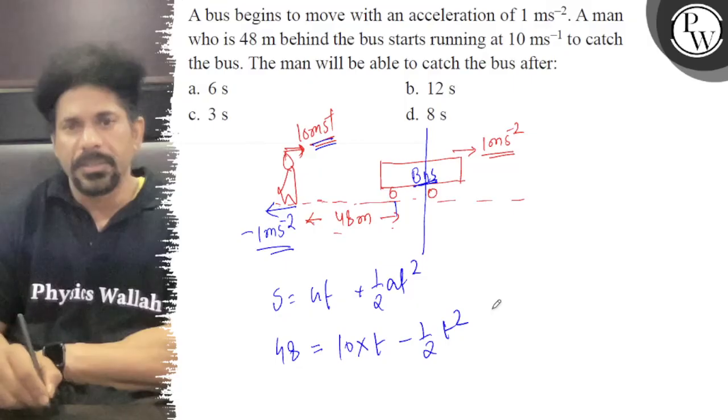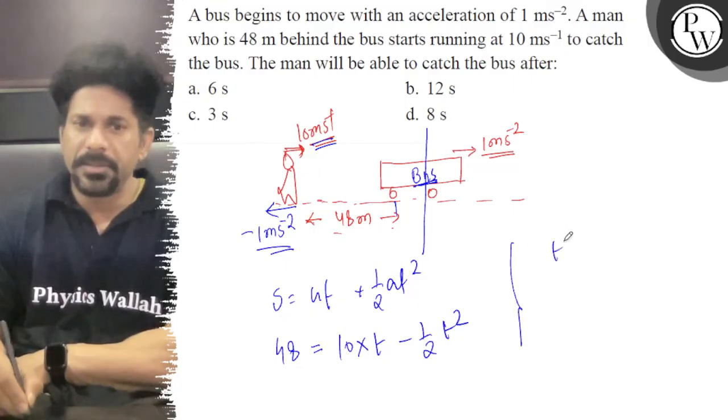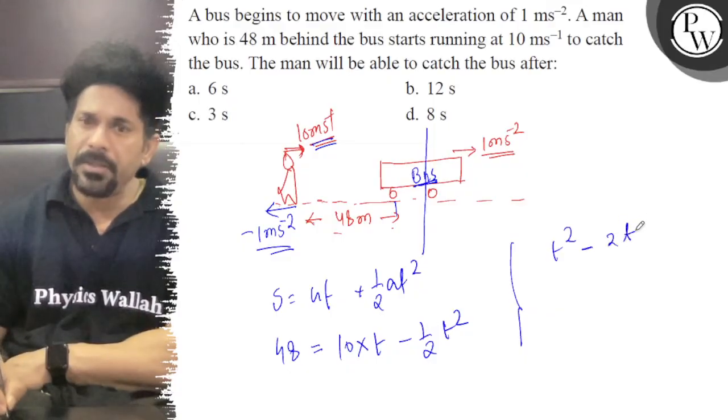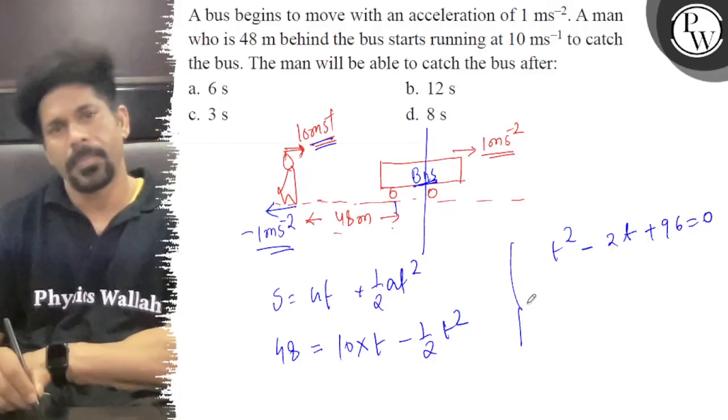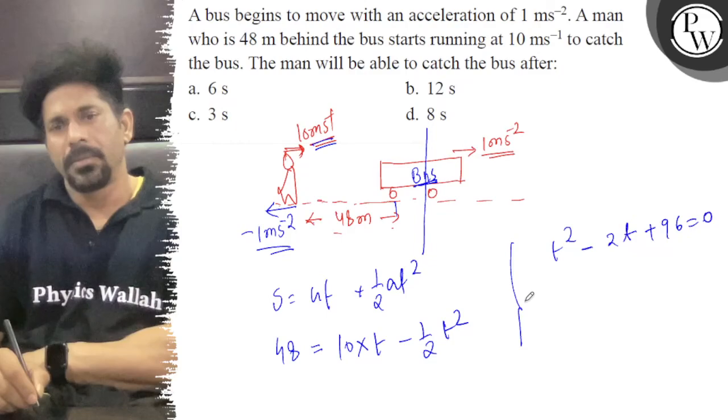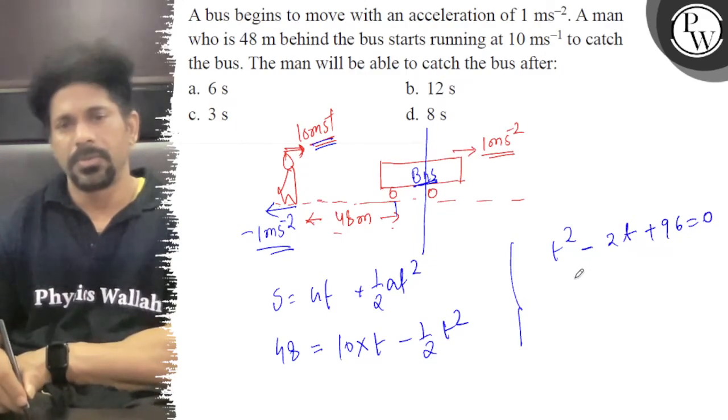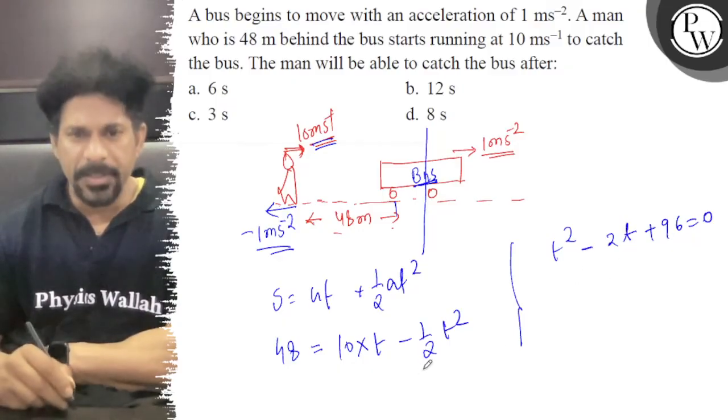So that equation becomes t squared minus 20t plus 96 equals 0.